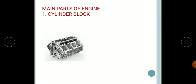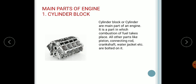First engine part: the cylinder block. The cylinder block is basically made up of cast iron or aluminium alloys. The cylinder block or cylinder is the main part of the engine — it is the part in which the combustion of fuel takes place. All other parts like piston, connecting rod, crankshaft, and water jacket are bolted into it.